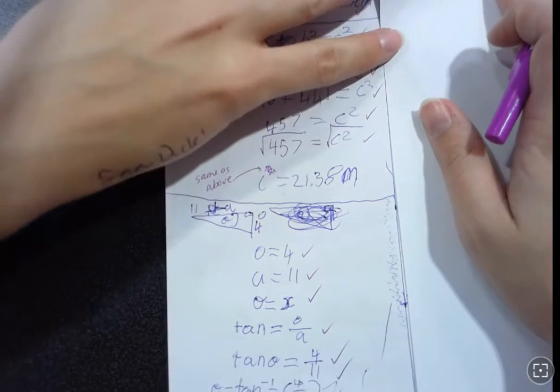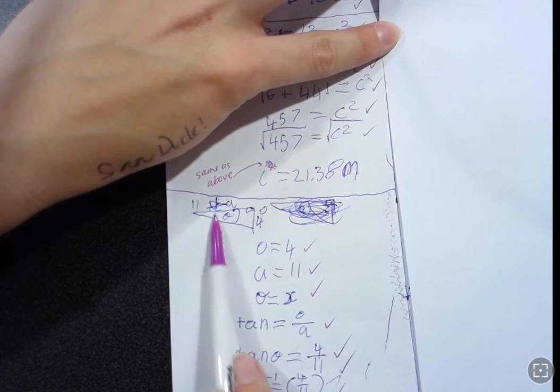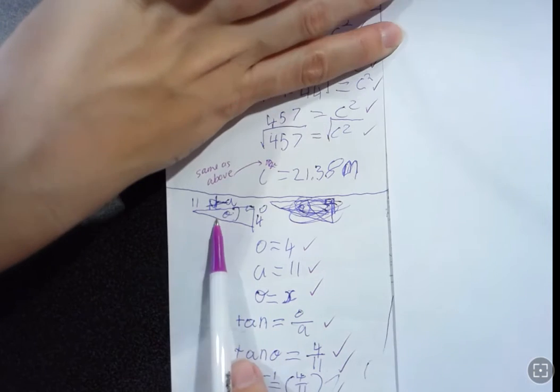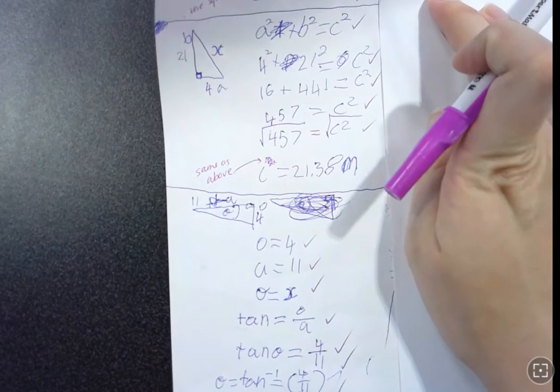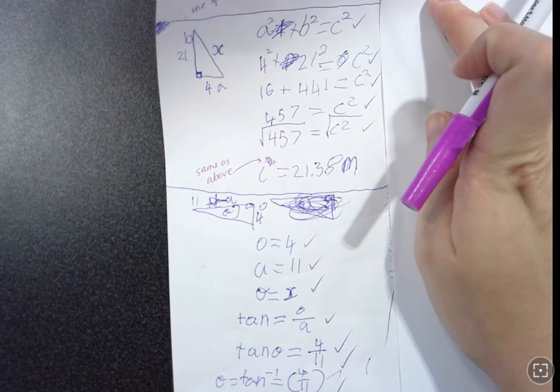All right, our next question, let's have a look here. We've got finding angles in trigonometry, not a problem. So you've done everything perfectly there, that was the last topic we did so I think it must be nice and fresh in your brain, well done.